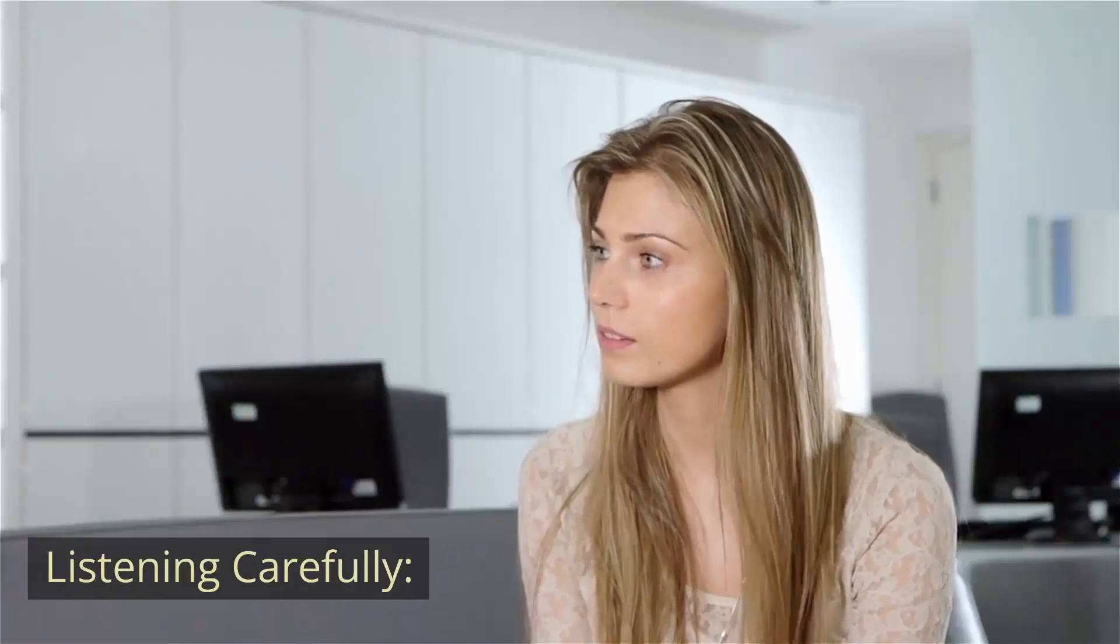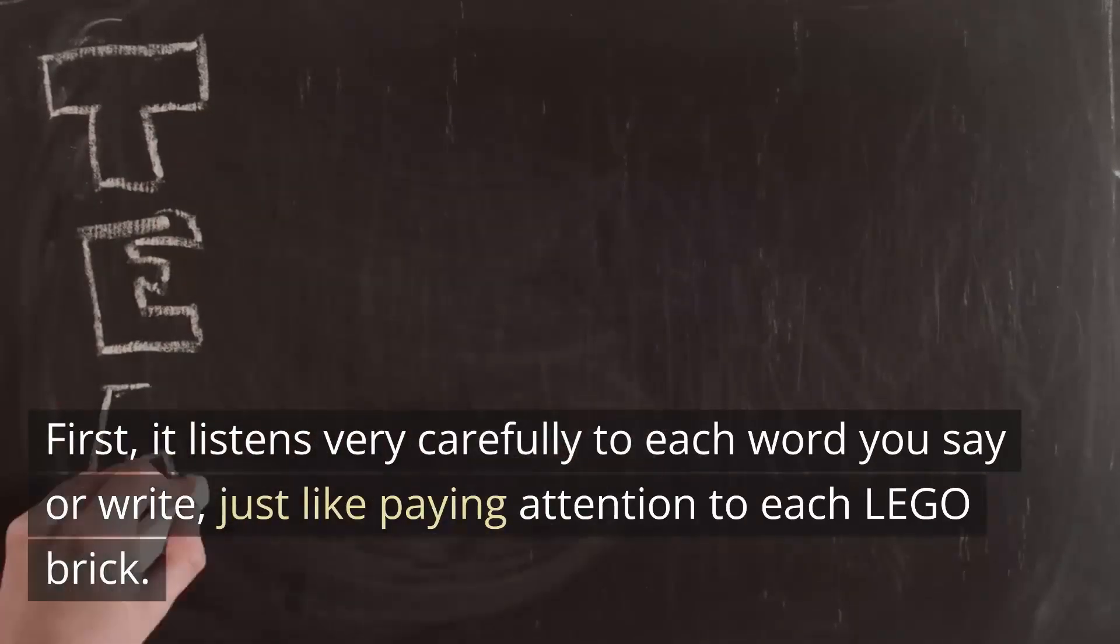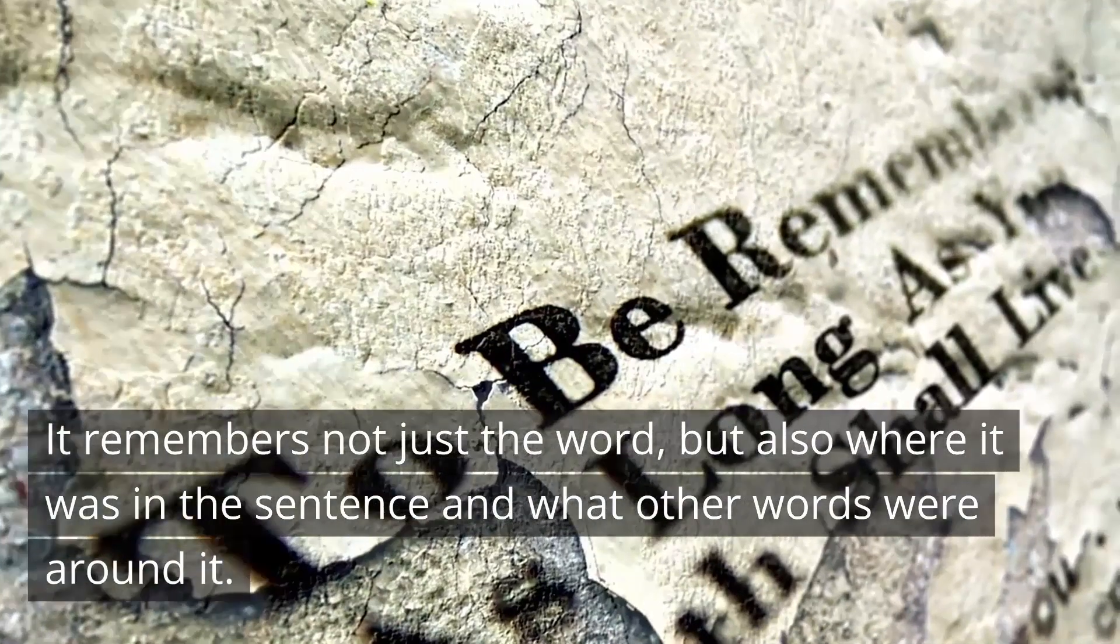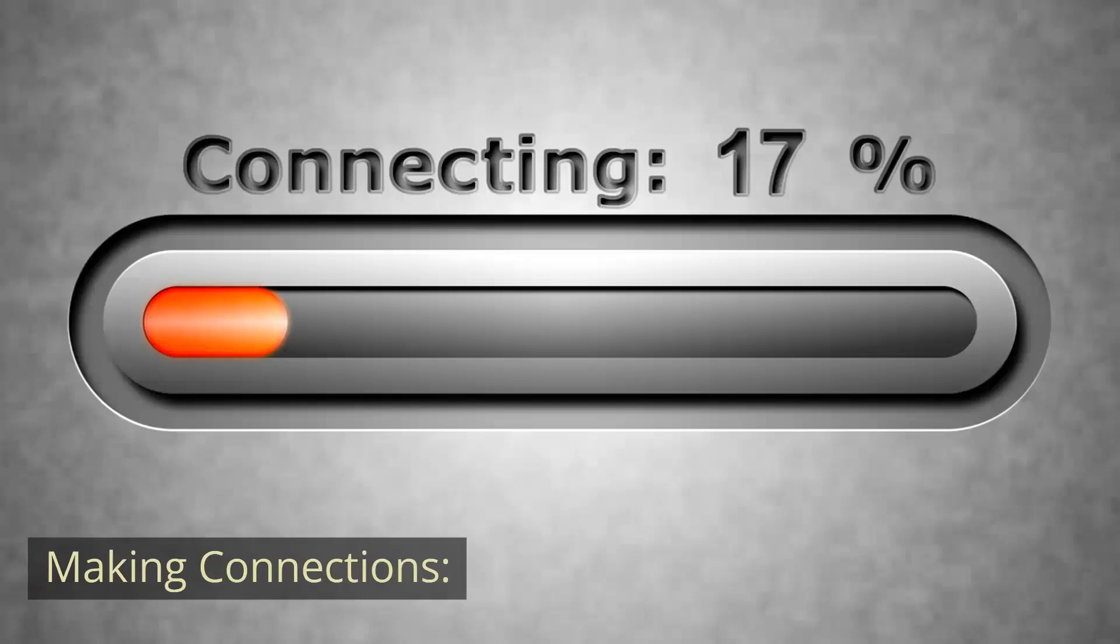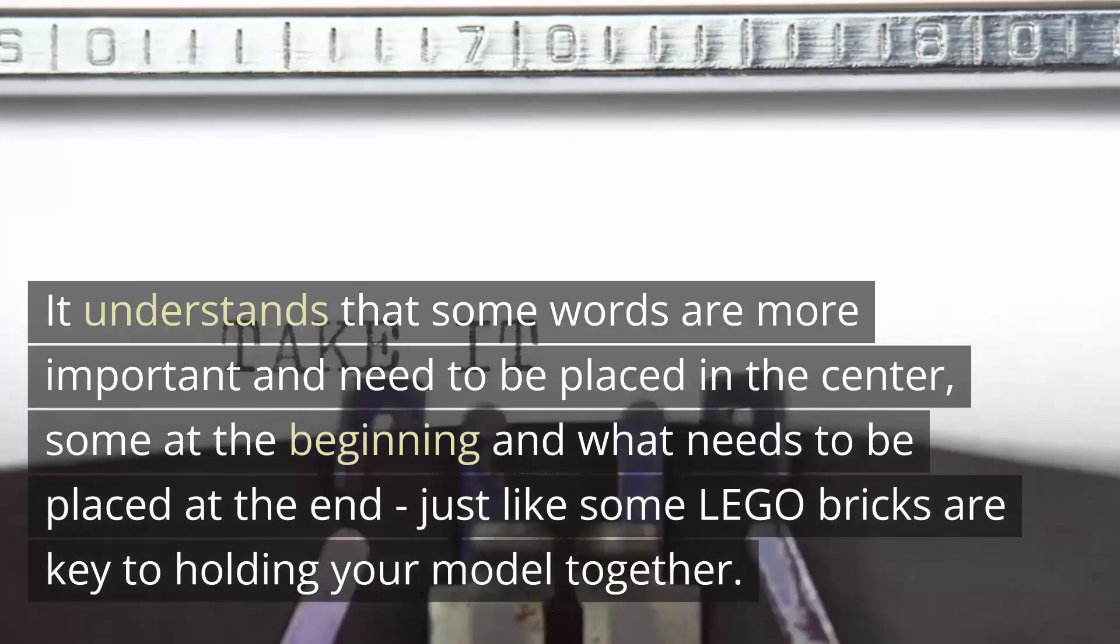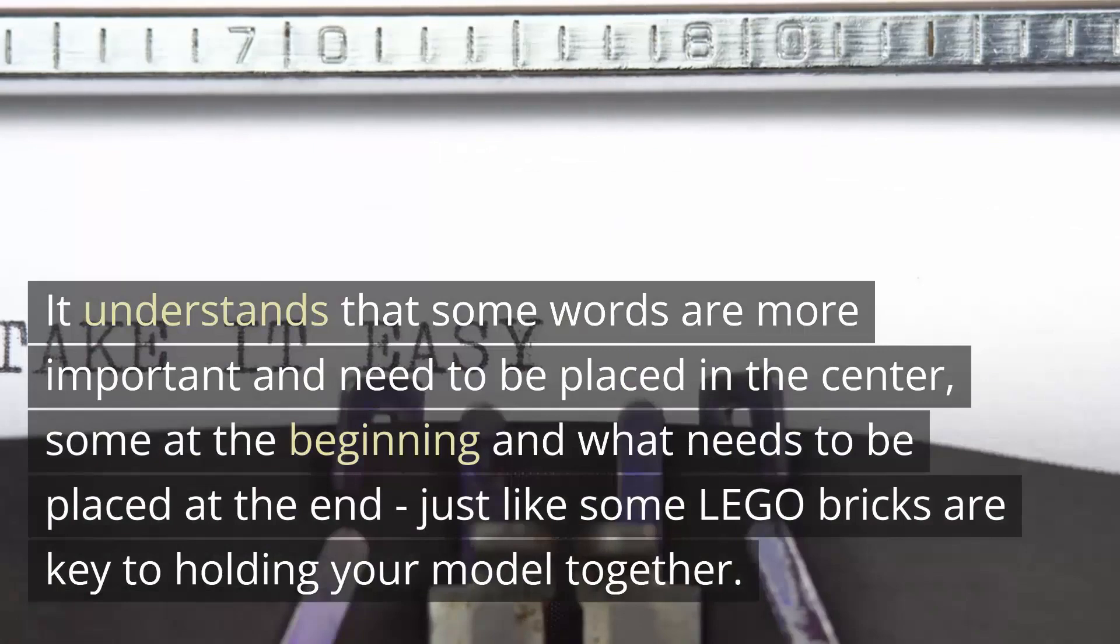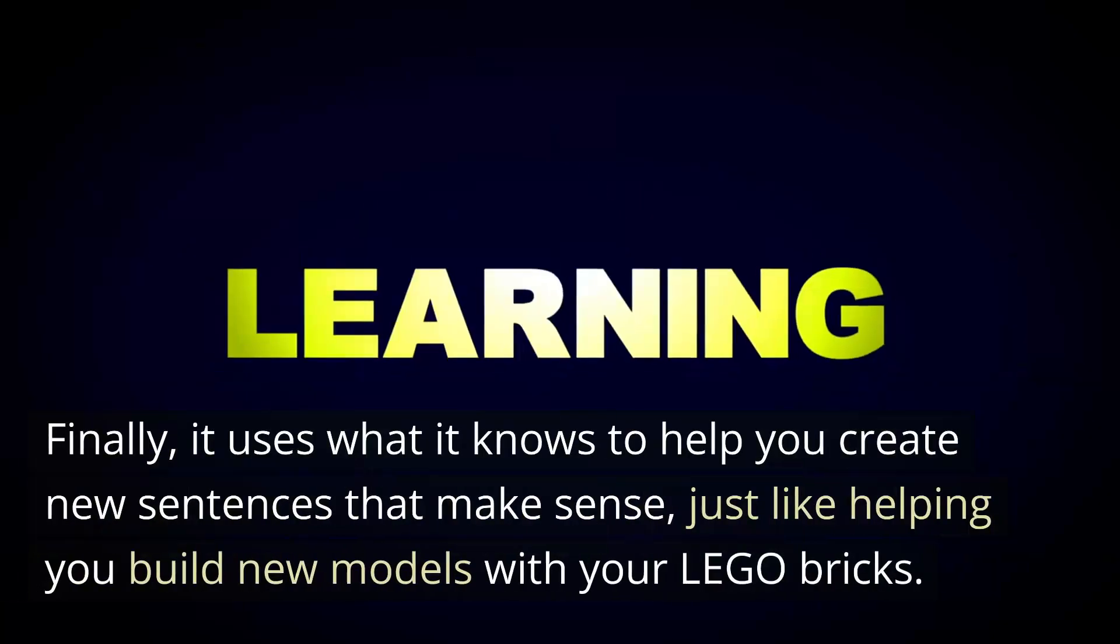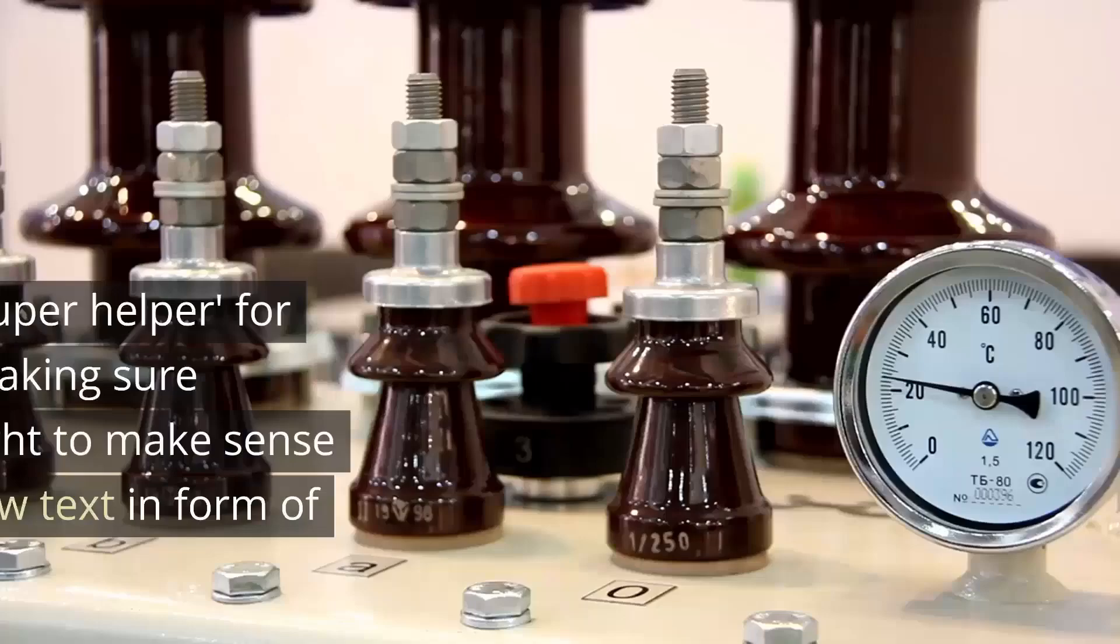Our super smart assistant, who has been trained on understanding how words fit together to make sentences that make sense, will generate new text and sentences for you. Here's how this expert helps. Listening carefully. First, it listens very carefully to each word you say or write, just like paying attention to each Lego brick. Remembering everything. It remembers not just the word, but also where it was in the sentence and what other words were around it. This is like remembering where each Lego brick goes in your model. Making connections. It thinks about how all the words or bricks are connected.